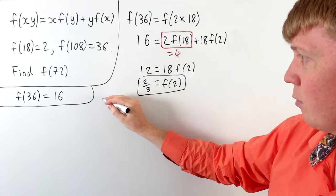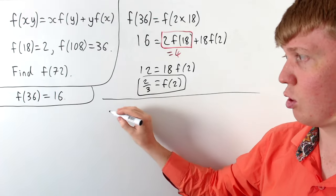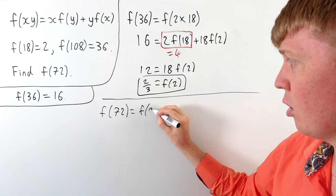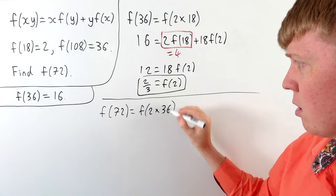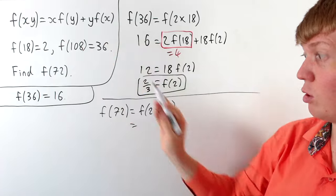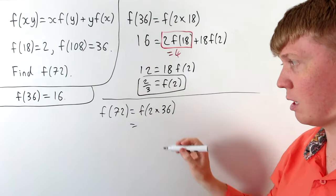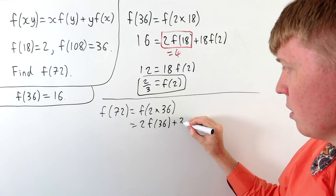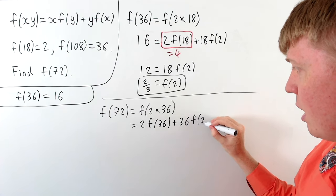And now we're ready to find the value of our function at 72. So we can start off writing this as f of 72 is going to be f of 2 times 36. So we can use our functional equation with x is 2 and y is 36.